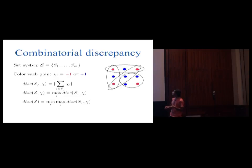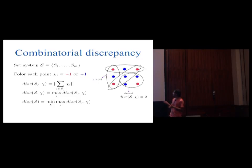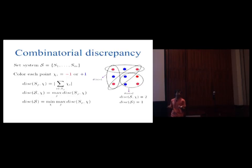As an example, in this picture this circular set has discrepancy of 2. Since this set has the maximum discrepancy, you get a discrepancy of 2 for the set system for this particular colouring. But the optimal discrepancy here is 1. For instance, if I make this blue point red, then this set has discrepancy 0 and every other set has discrepancy 1.